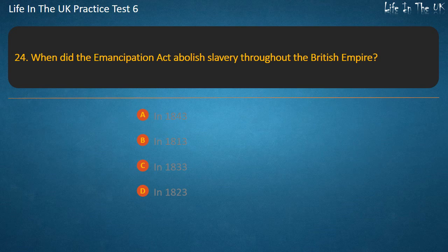Question 24. When did the Emancipation Act abolish slavery throughout the British Empire? Options: In 1843, In 1813, In 1833, In 1823. Answer: In 1833.